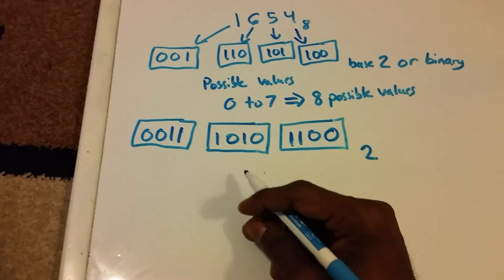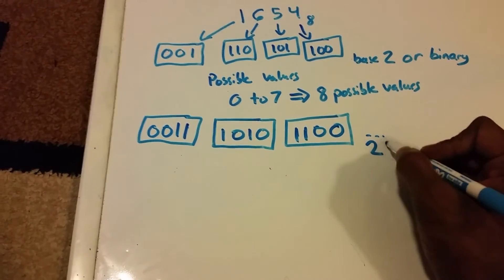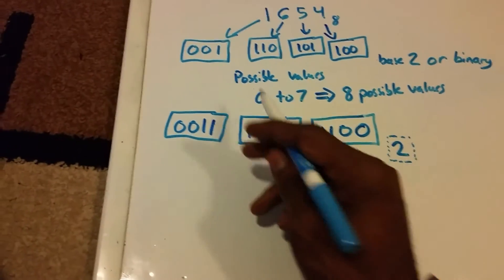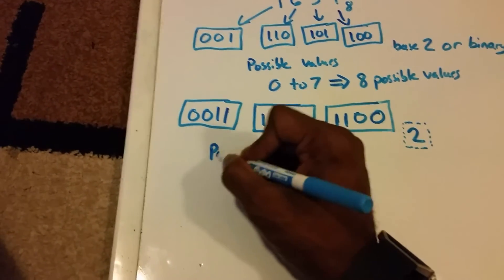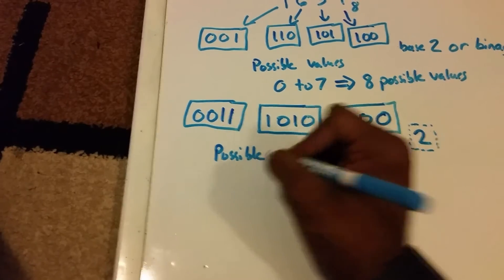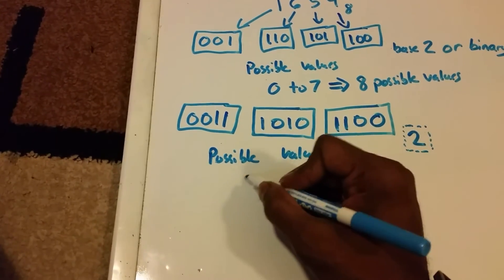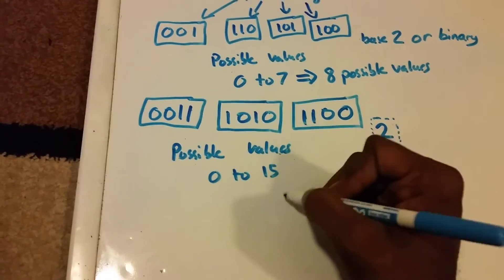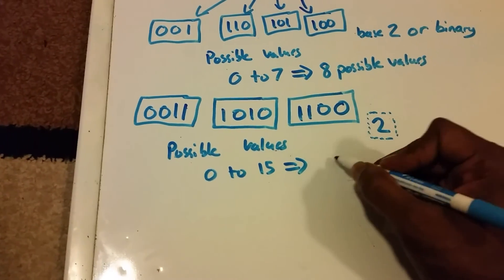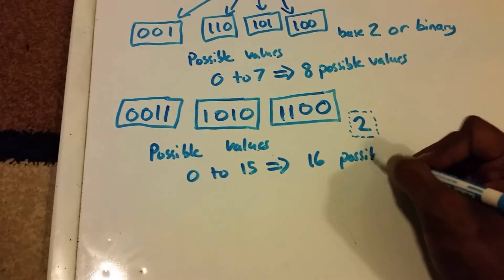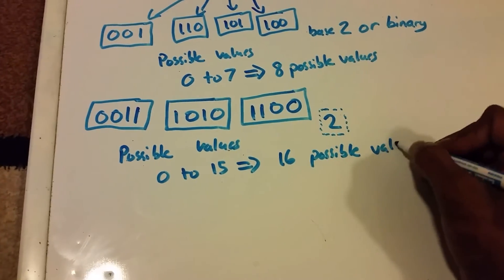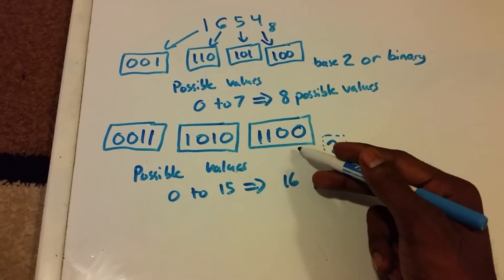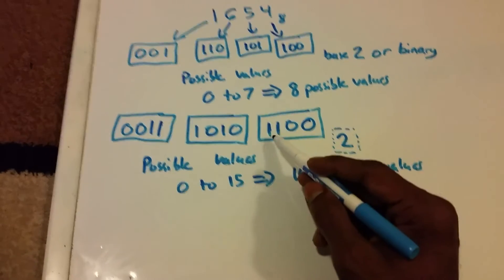The number of possible values is 0 to 15, which is 16 possible values. Now let's convert this to base 16.